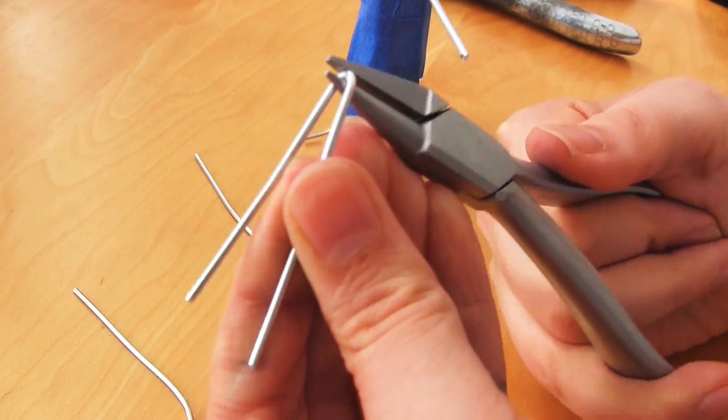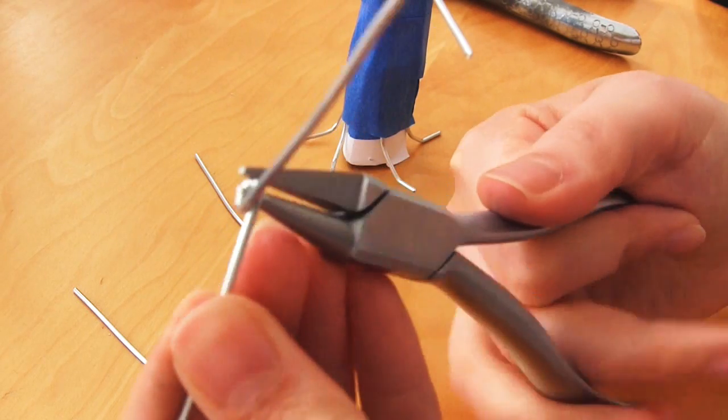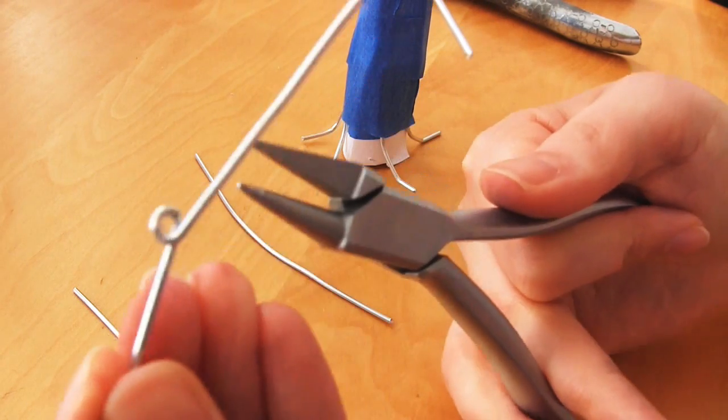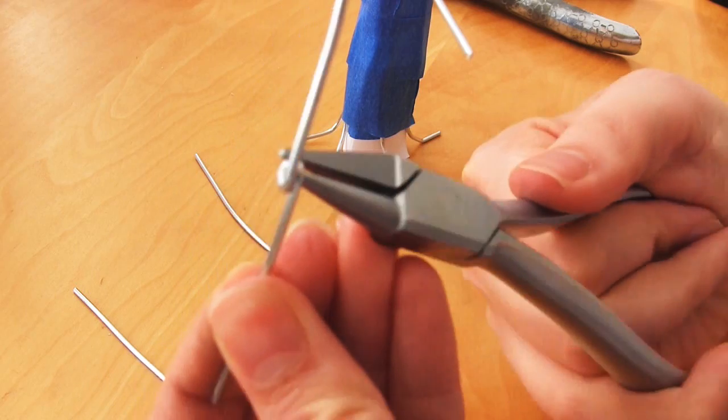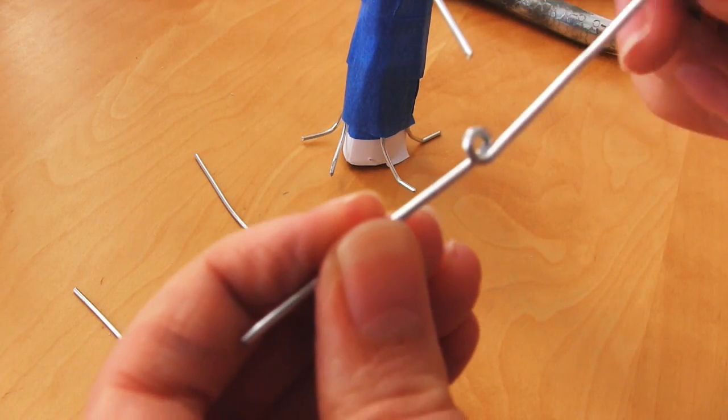Again I just guesstimated how long I wanted these branches and tried to make them in proportion with the other branches. Make them on the longer side because you can always cut them down to size if you don't like the way they look.